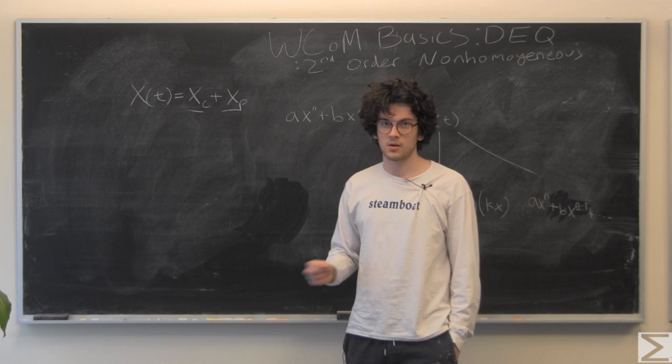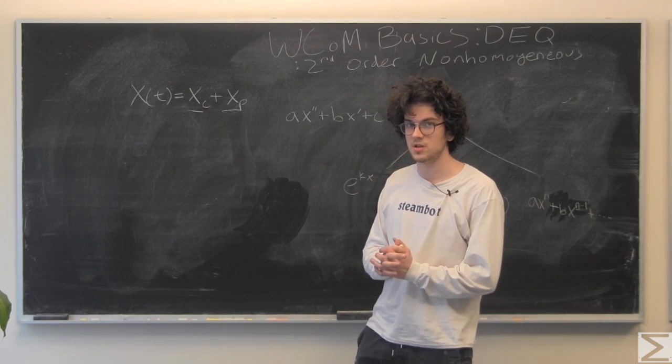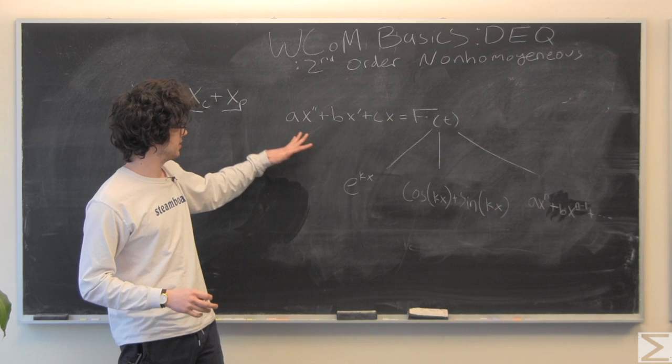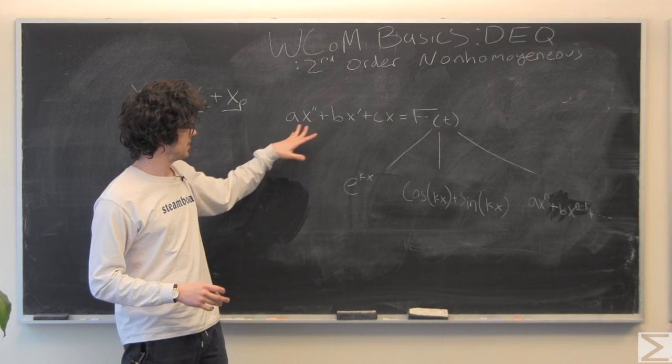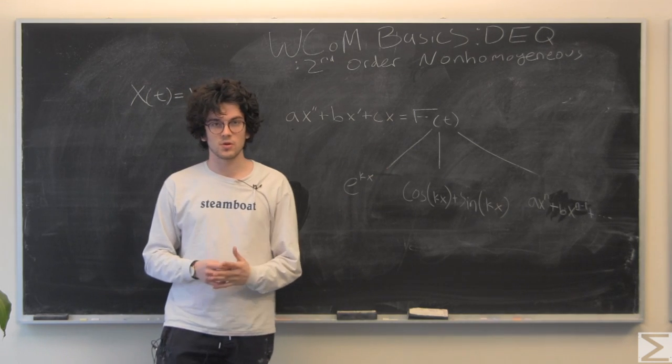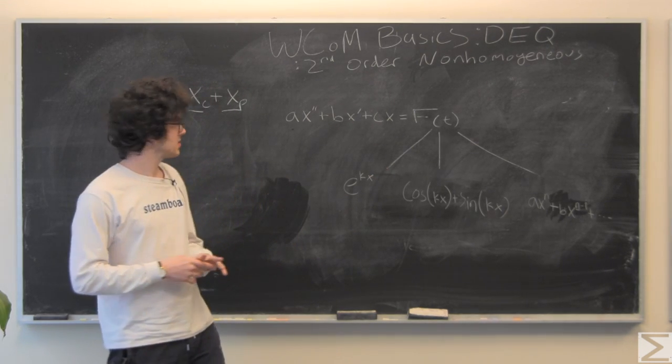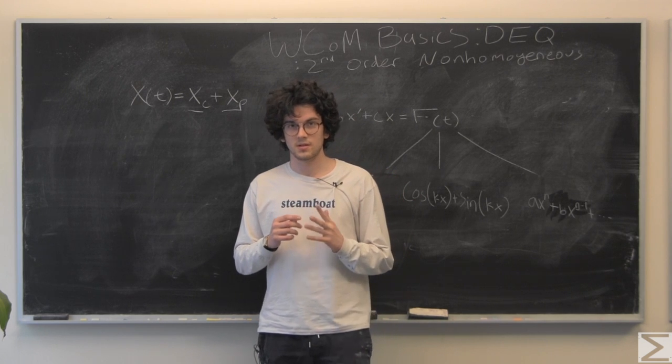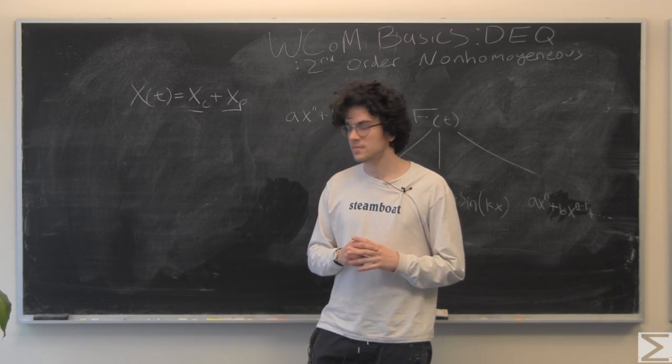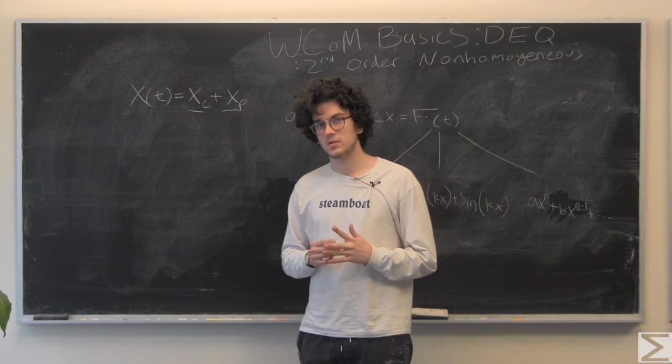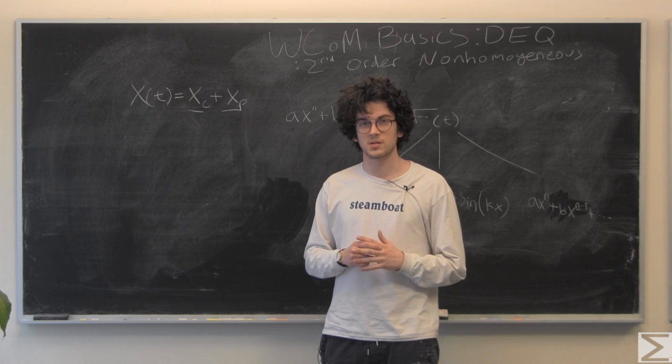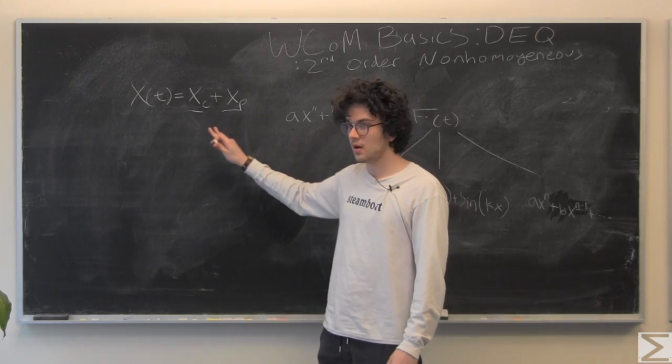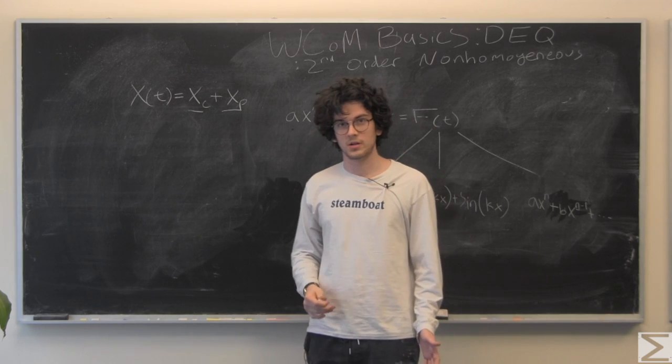The complementary solution we already have solved for in the past, which is just, all you do is set f of t equal to zero. You find the characteristic equation based on your a, b, and c, and then you solve for your roots. And then it's just x sub c equals c1 e to the r1 t plus c2 e to the r2 t. Of course, c1 and c2 may or may not be solvable based on if you have initial conditions or not.